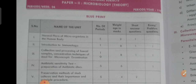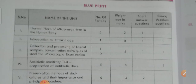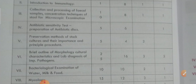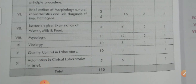Let us see one by one. Microbiology is consisting of overall 11 units: microbiology as the first unit, normal flora of microorganisms in the human body, introduction to immunology, collection and processing of fecal samples, concentration techniques of stool for microscopic examination, antibiotic sensitivity test, preparation of antibiotic disc, preservation methods of stock cultures and their importance and principal procedure, brief outline of morphology, cultural characteristics and lab diagnosis of important pathogens, bacteriological examination of water, milk and food, mycology, virology, quality control in laboratory, and automation in clinical laboratory in brief.